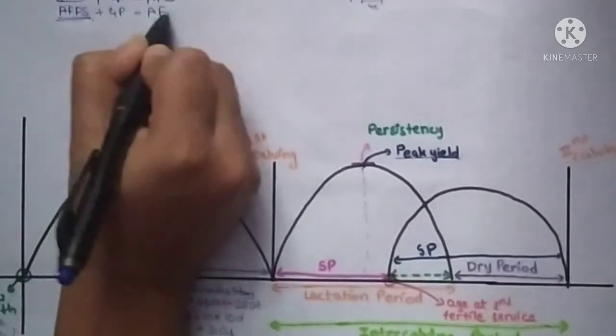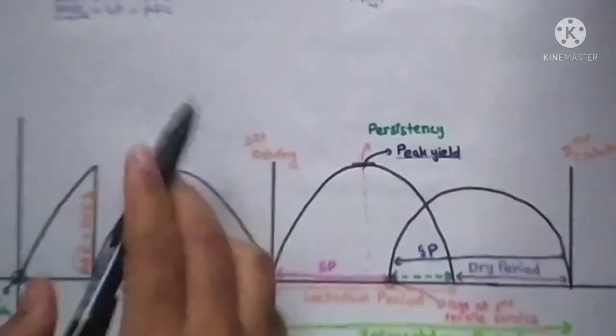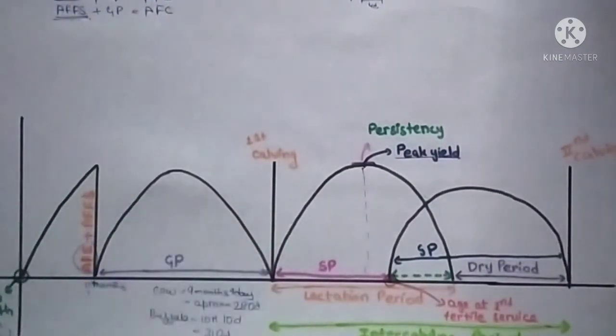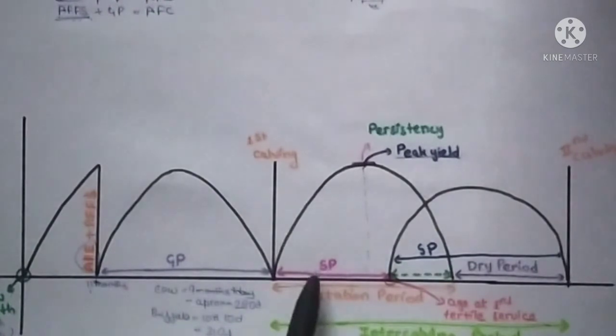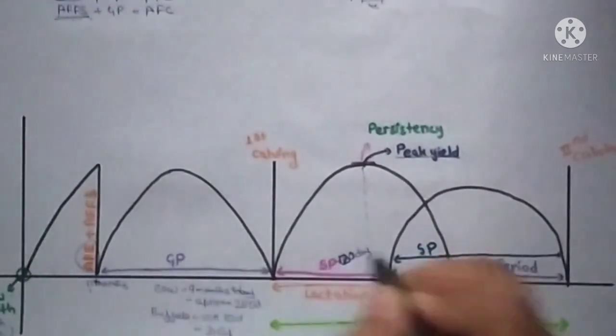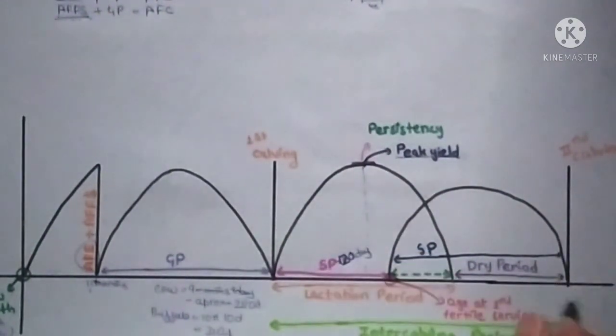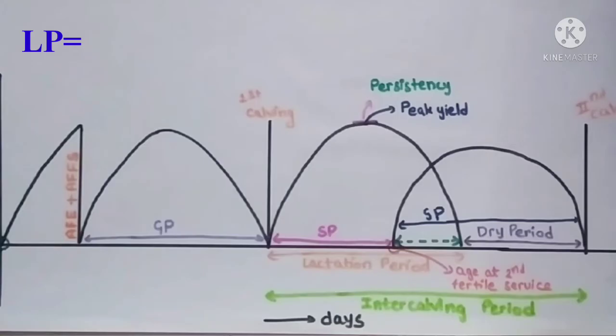Age at first fertile service plus gestation period is known as age at first calving. The service period of a cow is approximately 120 days, and the dry period is approximately 60 days. To find the lactation period: in a year there are 365 days, subtract the 60-day dry period, giving 305 days. So the lactation period is approximately 305 days.